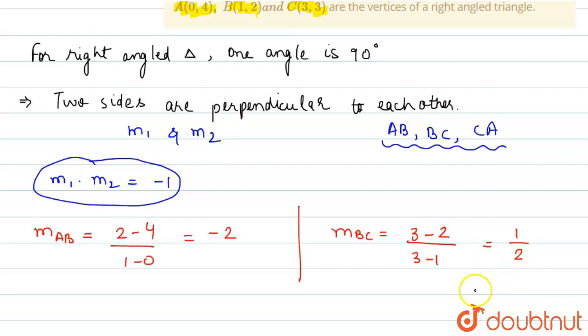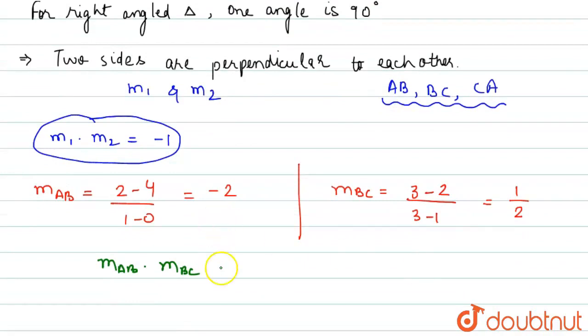Now, if we multiply M_AB times M_BC, see what we get. M_AB is minus 2 and M_BC is 1 upon 2. So, this equals minus 1.